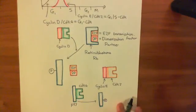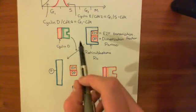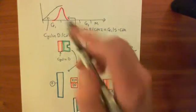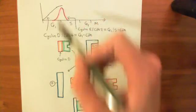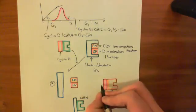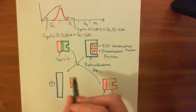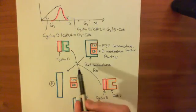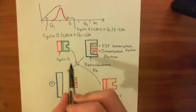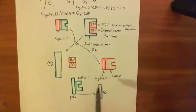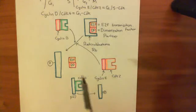CDK4 can then bind with cyclin D to form cyclin D CDK4 complexes, which are capable of phosphorylating the retinoblastoma protein and releasing the E2F-DP complex. So this spike in cyclin E CDK2 is responsible for increasing cyclin D CDK4 complexes. In addition, cyclin E CDK2 can also directly phosphorylate the retinoblastoma protein, though cyclin D CDK4 is thought to be the main driver of RB phosphorylation.